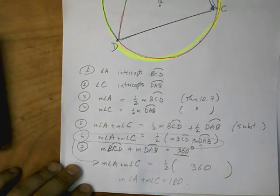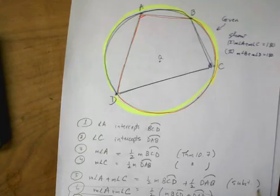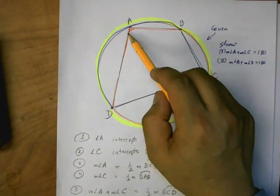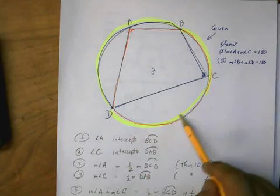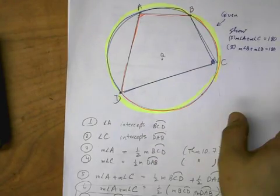And there you have it, the proof is complete. So the proof here, the idea here is just to use the property of the inscribed angle and the intercepted arcs.